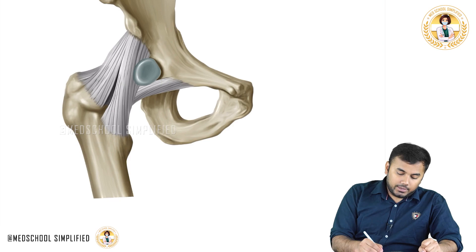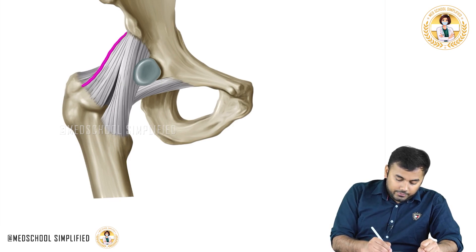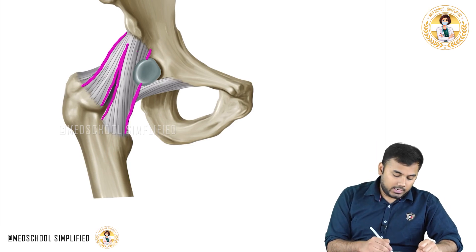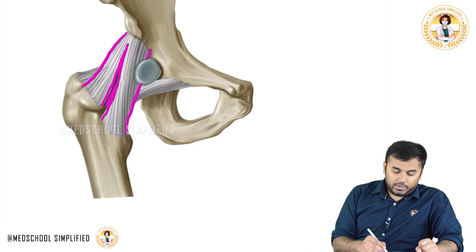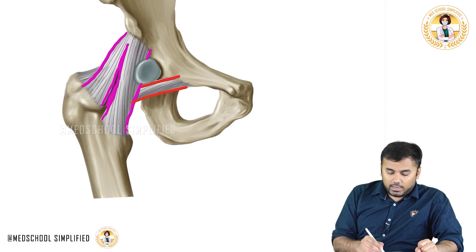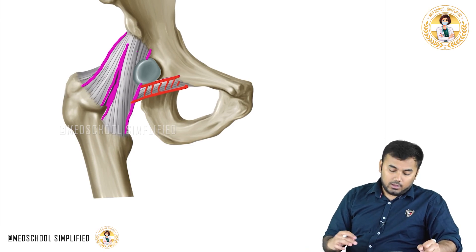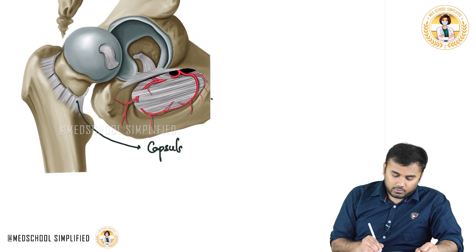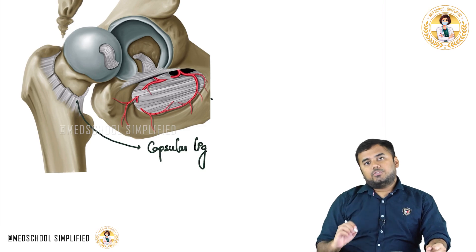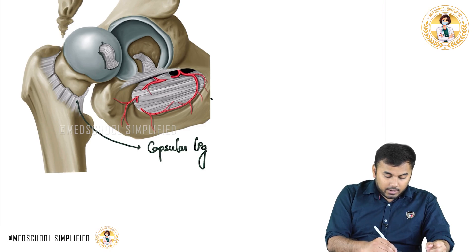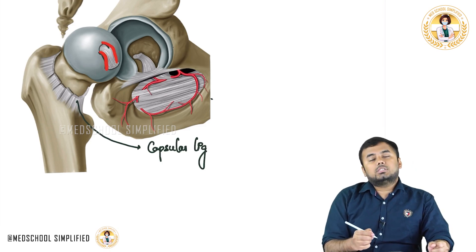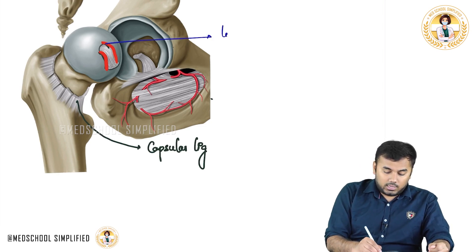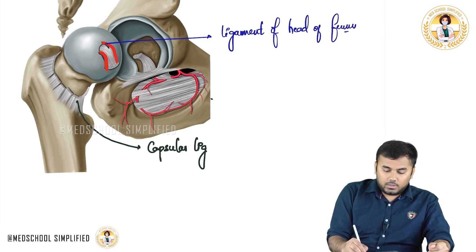In the real picture, you can see the lateral thick part, medial thick part, and the thin center — that is the iliofemoral ligament. The ligament running transversely is the pubofemoral ligament. In the next picture, the ligament sitting like a cap is the capsular ligament. Through the fovea, the ligament coming out is the ligament of the head of the femur.